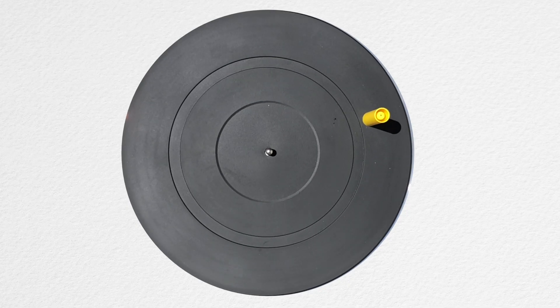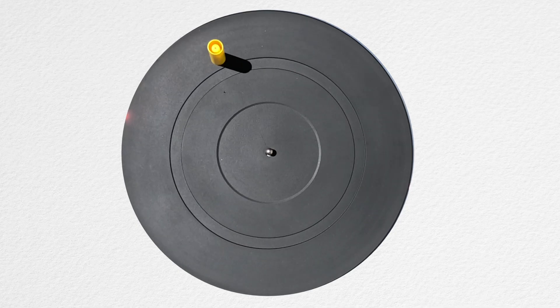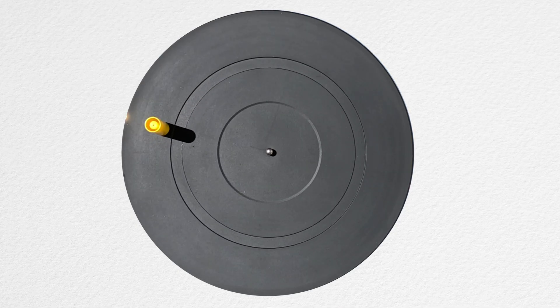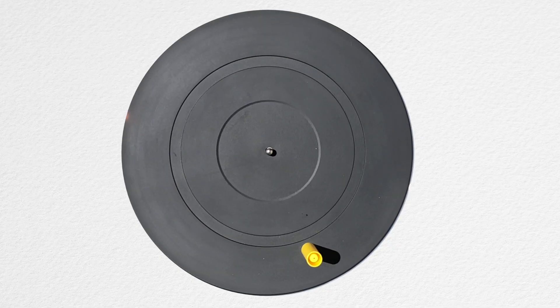Let's take a look at this turntable of a record player. I have placed a yellow marker cap on it so we can observe the circular motion of the cap. Does everybody see that the cap is moving in circular motion? Yeah.